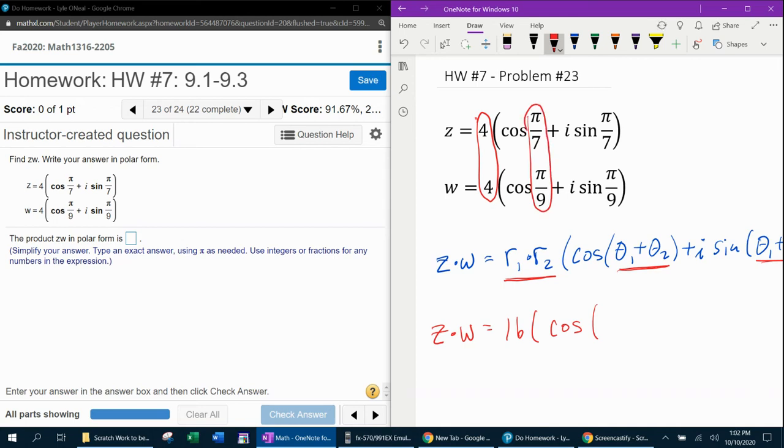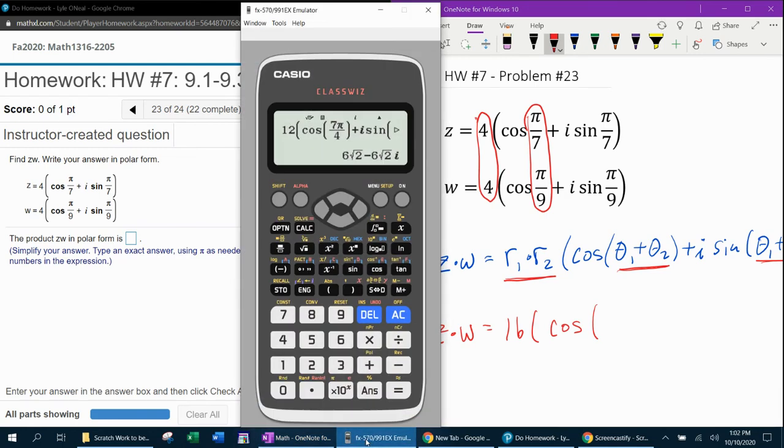Now if you have trouble adding fractions that do not have a common denominator, well, welcome to the calculator. We can actually do pi over 7 plus pi over 9, and the Casio handles it quite nicely. 16 pi over 63.